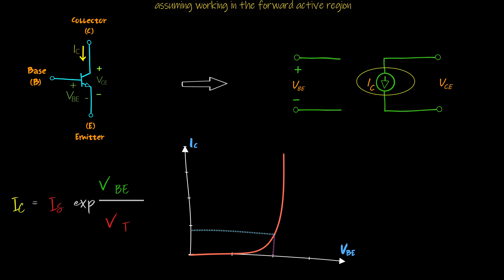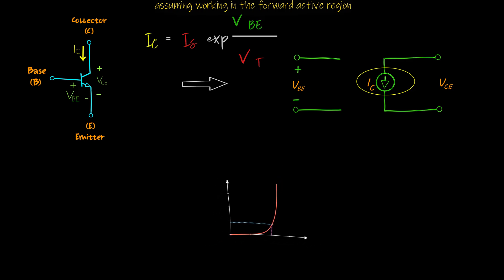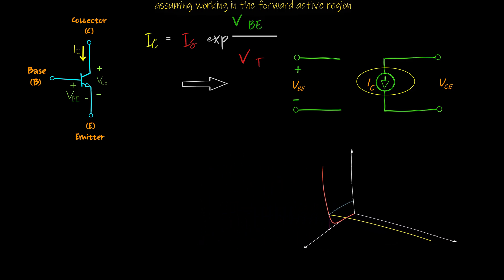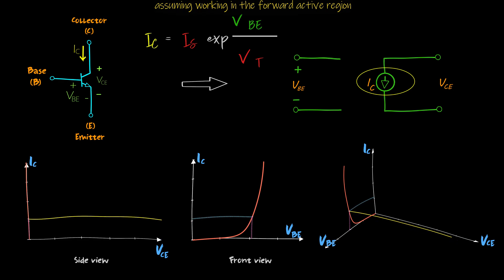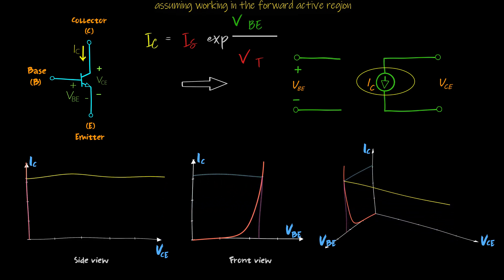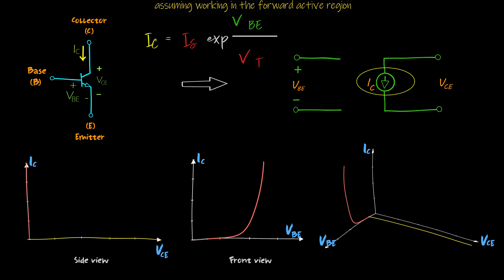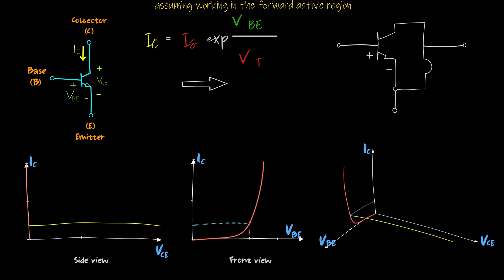A small change in the base-emitter voltage is able to change the collector current substantially — an exponential relationship. At the same time, changing the collector-emitter voltage has no effect on the collector current. Front view and side view graphs show the relationship of the output current versus VBE and VCE. These graphs are valid only for the forward active region. So IC can be modeled as a current source with a constant value determined by VBE, no matter what VCE is — a voltage-controlled current source.